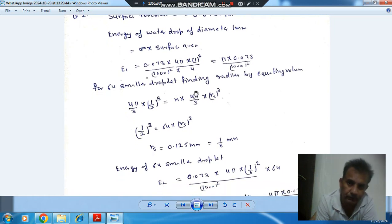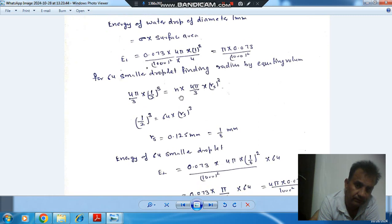Now this droplet has split into 64 smaller droplets. The volume of the initial droplet equals the volume of 64 droplets. Initial volume is 4π/3 r³, and volume of small droplets is N times 4π/3 rs³, where N equals 64.